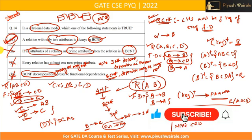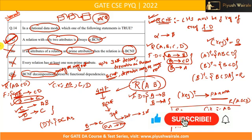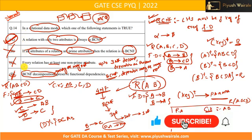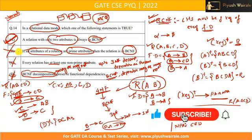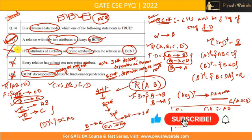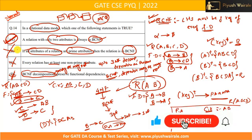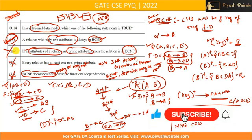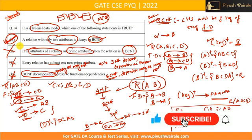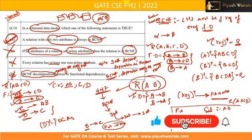So the correct option is option A. For every question on this topic, you must know what is a prime attribute, what is a non-prime attribute, how to find candidate keys, how to find the closure of attributes, and what the conditions are for various normal forms. These are the only things you need to apply. I have covered all of that in the previous videos, so watch those and try to solve problems. That's it from this video. Thank you.